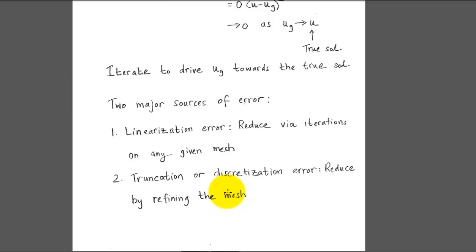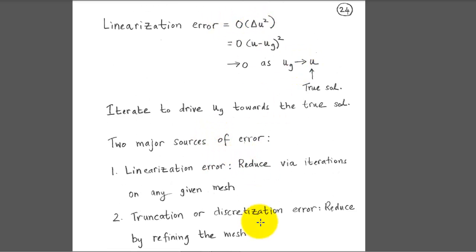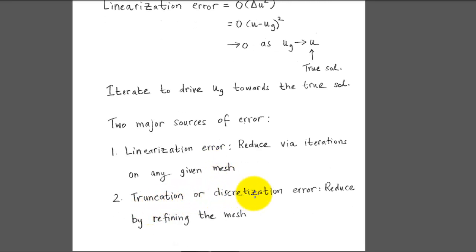Let me highlight the two major sources of error when solving a nonlinear equation using the finite volume method. First, there is the linearization error, which we reduce via iterations on any given mesh — iterating drives the guess solution toward the true solution. Second, there is the truncation or discretization error, which we reduce by refining the mesh. In a linear problem, only the second error exists; in a nonlinear problem, both errors must be sufficiently small.